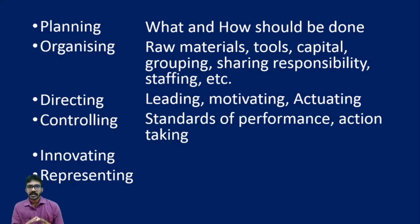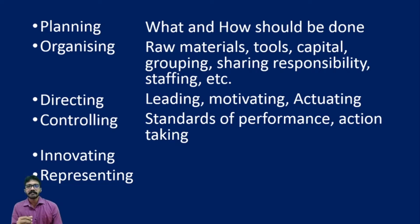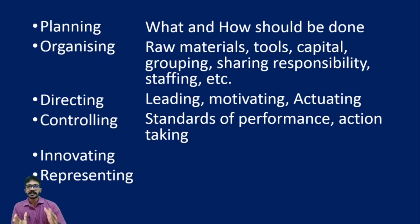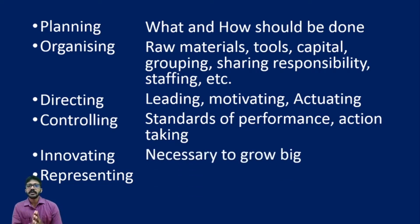The next function is controlling. In a manufacturing industry, there will be certain predefined standards for any product depending on the country or continent. We have to make sure our product meets those standards; otherwise, the society will not accept it. We must ensure that whatever the organization produces as a product or service is as per the standards. Each and every step, we check the progress, ensure we are going as per the plan, and if there is any mistake, we rectify it — that is called action taking. This is the controlling function.